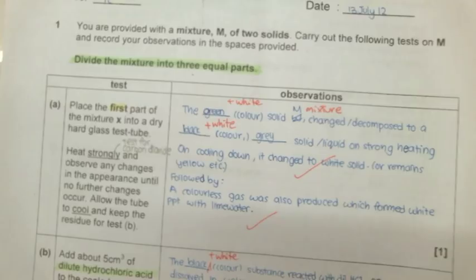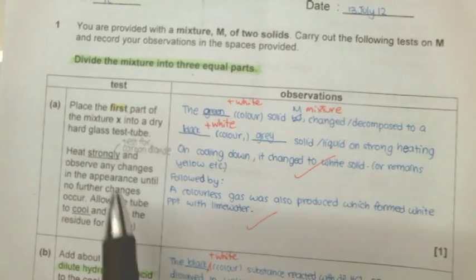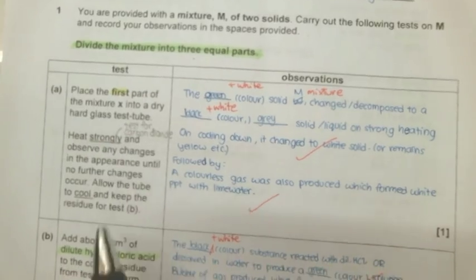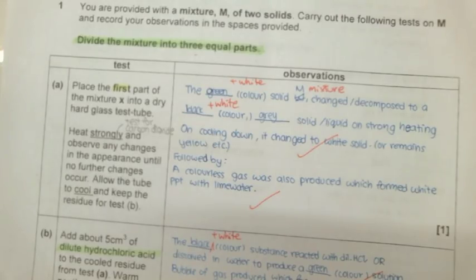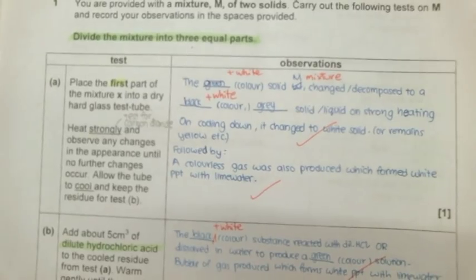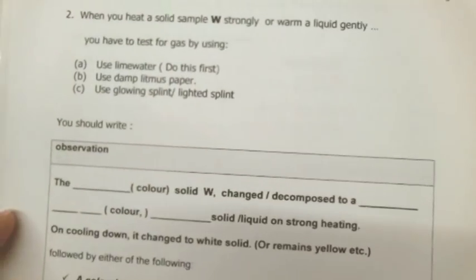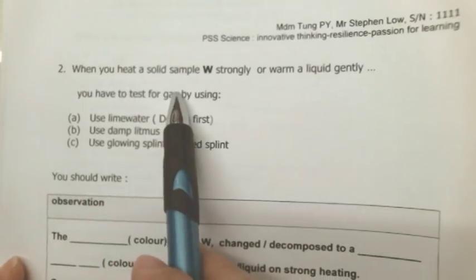You're supposed to heat the mixture X into a hard glass test tube. It's supposed to heat strongly. Now what does that mean? If you look at the FAQ, chemistry FAQ that we have given to you, you should see something like that.